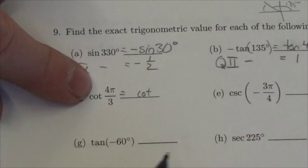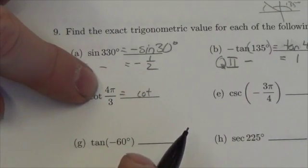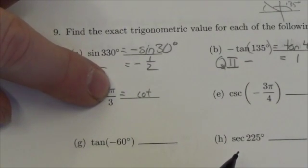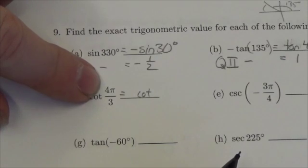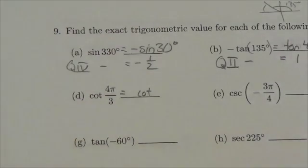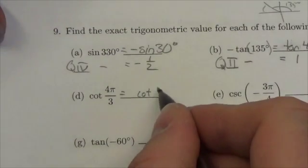4π over 3, when it's in radians, all I've got to do is this. Want to see it again? It's just π over 3. There's my reference angle.